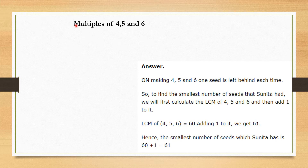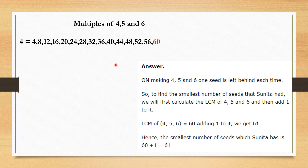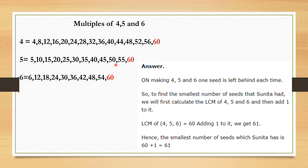To solve this, we find the LCM of 4, 5, and 6 using the listing multiples method. We write multiples of 4, then multiples of 5, then multiples of 6. We look for the least common number among all three. There could be several common numbers, but the least common number is 60. So LCM of 4, 5, and 6 is 60.